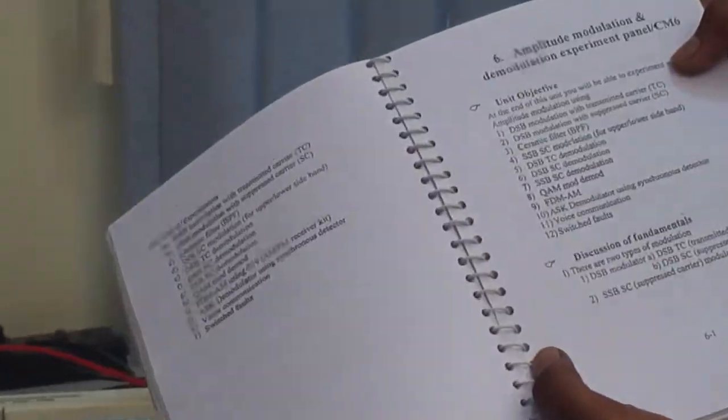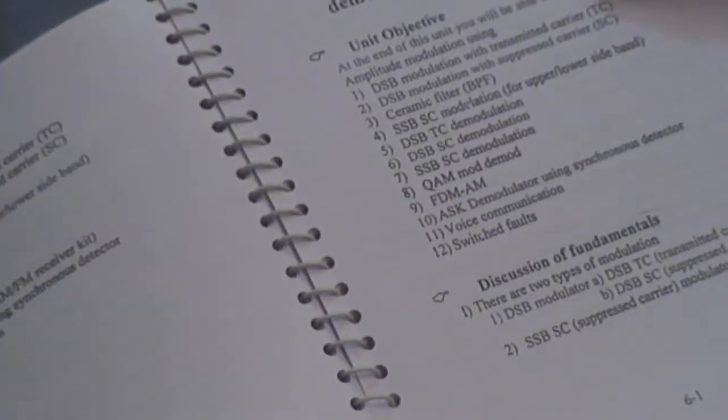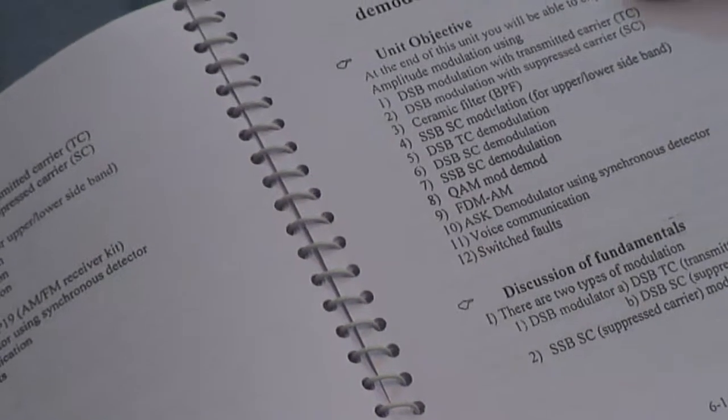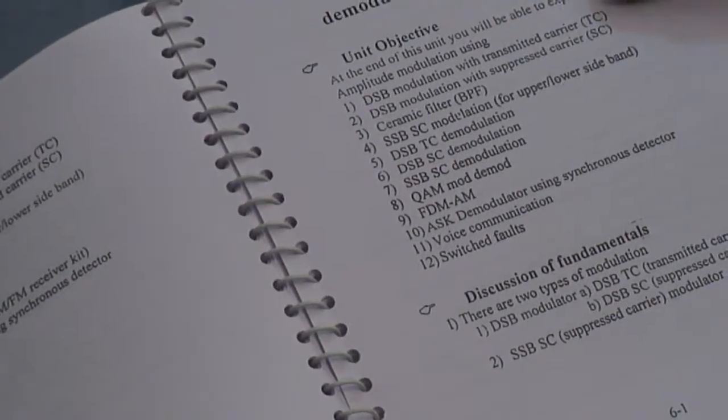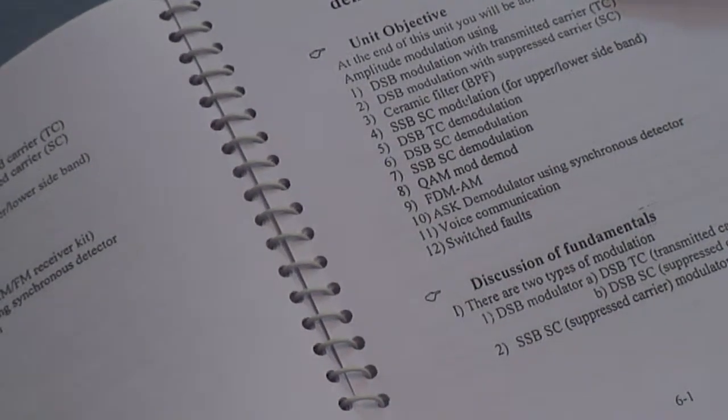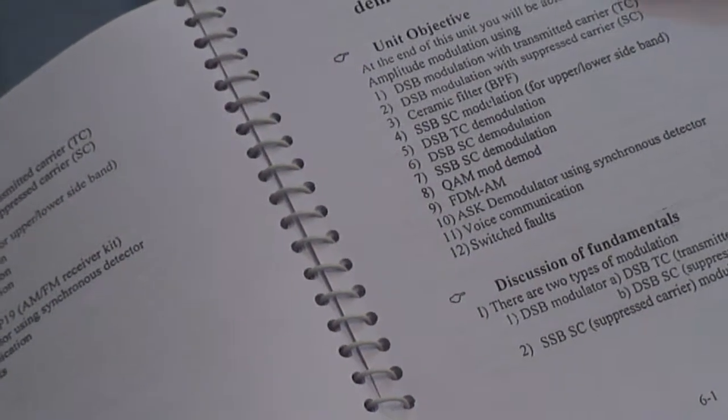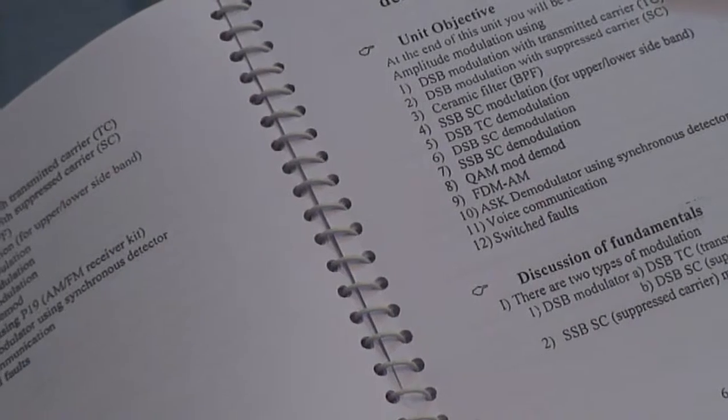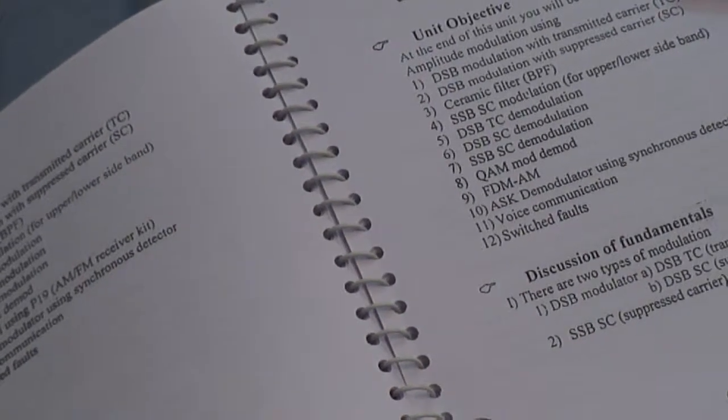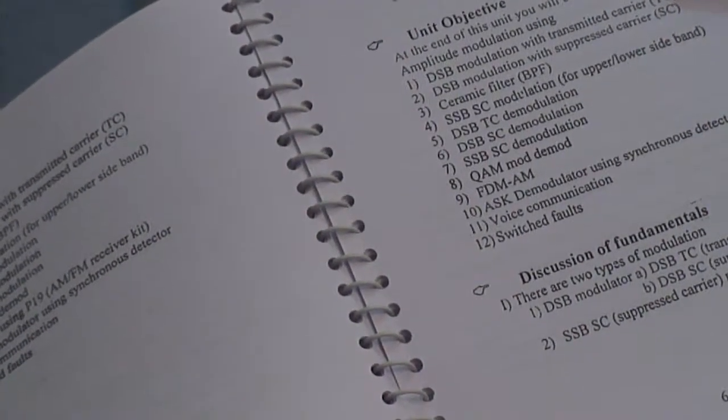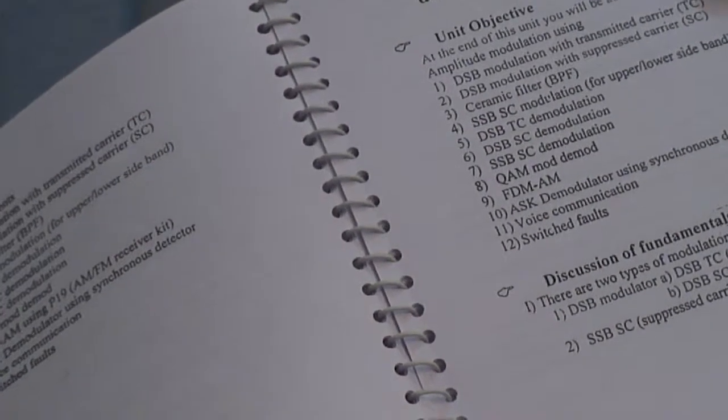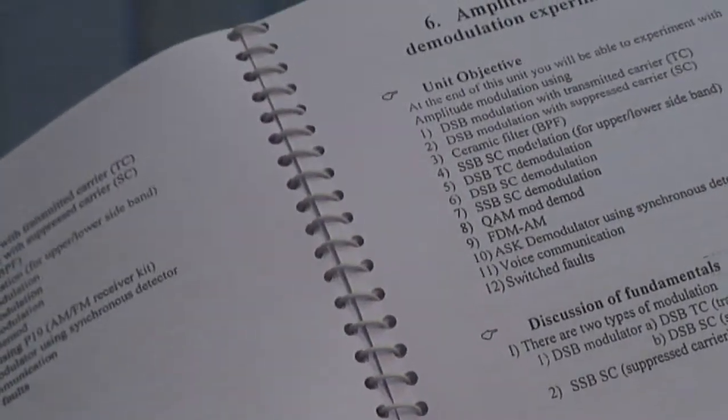DSB modulation with transmitted carrier, DSB modulation with suppressed carrier, ceramic filters, SSB-SC modulation, DSB-TC demodulation, DSB-SC demodulation, SSB-SC demodulation, chord mod demod, FD1-AM ASK modulator with synchronous detector. All these experiments we can perform on this CM6 panel.